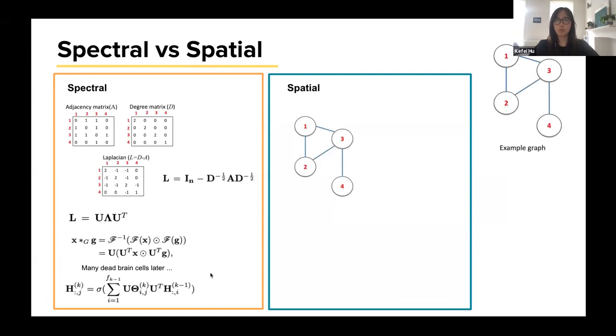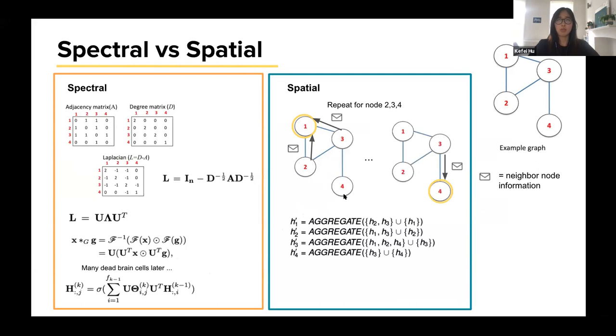When it comes to spatial, it operates the aggregation on one node at a time. For example, for node one, we would aggregate the information from node two and node three, as well as the initial features from node one, to obtain an updated node embedding for node one. We would repeat this for all the nodes in this graph, and this counts as one convolution layer. Essentially, you could just initialize the embedding for all the nodes in this graph to be their initial node features. You repeat this convolution a number of times in order to get their final embedding for each of the nodes in this graph.